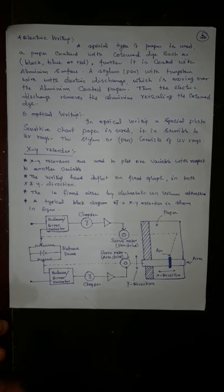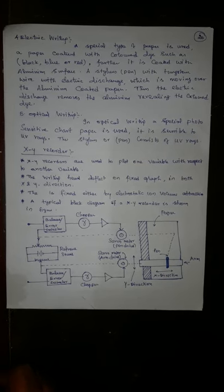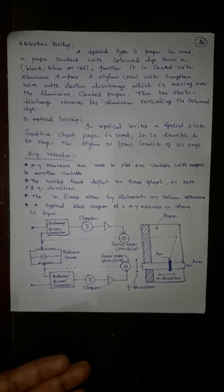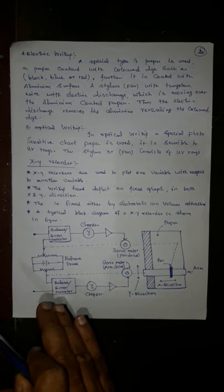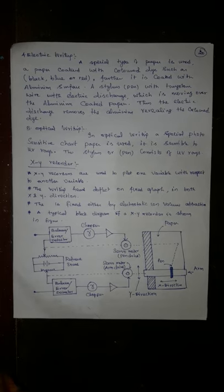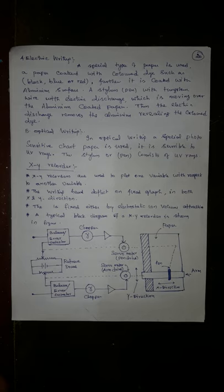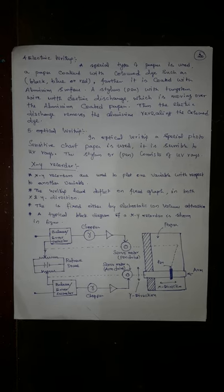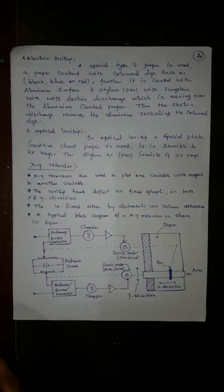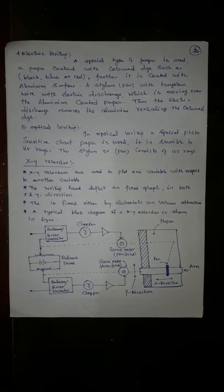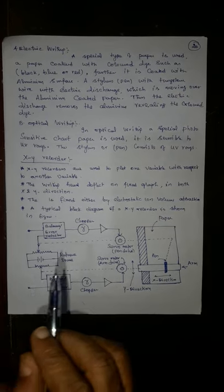A special type of paper is used, a paper coated with a colored dye such as black, blue or red. Further, it will be coated with an aluminum surface. Then a stylus or pen with tungsten wire with electric discharge moves over that aluminum coated paper. What happens? Due to this electrical discharge, the aluminum coating will be disappeared or melted or burned out. Thus, the electric discharge removes the aluminum revealing that color wherever the head is moving.